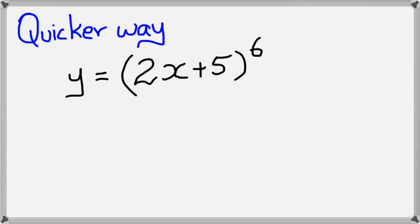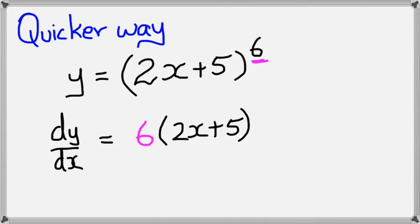So the quicker way of doing this, of differentiating this, we would have dy/dx equals... Now this is similar to your normal differentiating rules. For example, the 6 here, it'll come in front. So we'll have 6 multiplied by 2x plus 5 to the power of 6 take away 1.